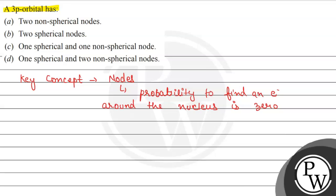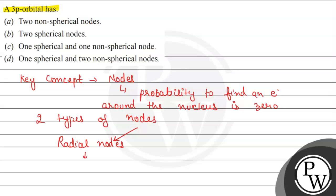Generally, we have two types of nodes. One, we have radial nodes, which we also call spherical nodes.